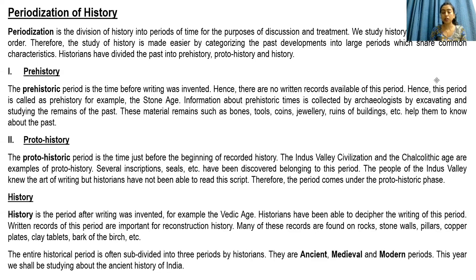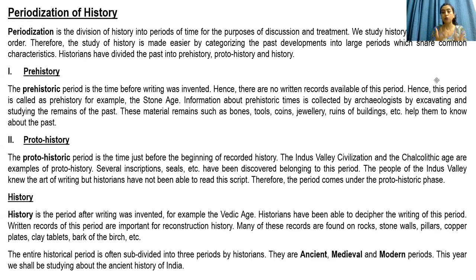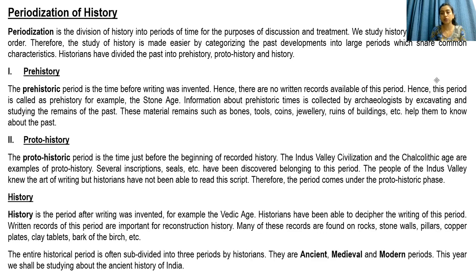Then comes proto-history. Proto-history means slowly, slowly humans have evolved. They have learned how to live in houses — from jungles, they have come to more concrete houses. They have learned how to eat cooked food and how to use fire. A lot of things were discovered at this point of time and people started to live in civilization. The Indus Valley Civilization is the best example which falls in this category of proto-history. At this point of time, some written records were also found, but historians were not able to understand the language or the script used by the people belonging to that period. That is why this period falls under the category of proto-history.